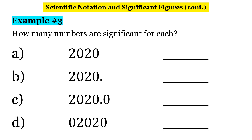Let's review with four examples. In the first one, the twos matter because they're non-zero numbers. The zero in the middle counts because it's a sandwiched zero. But the final zero — there's no decimal place — so it does not count. There are three significant figures in this case.